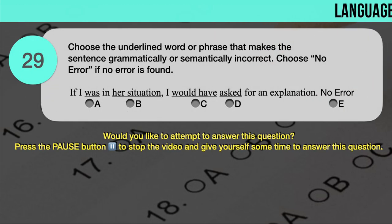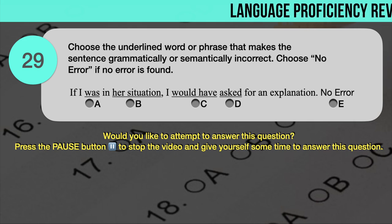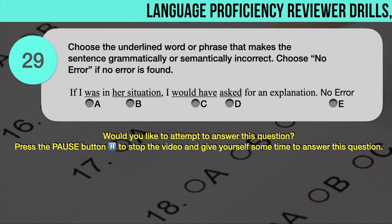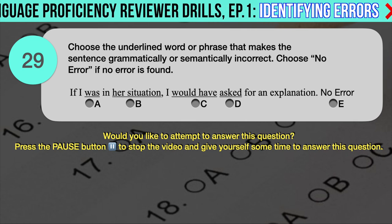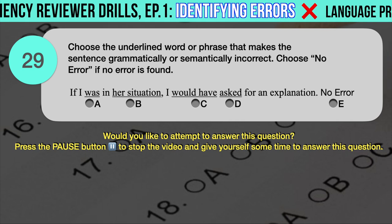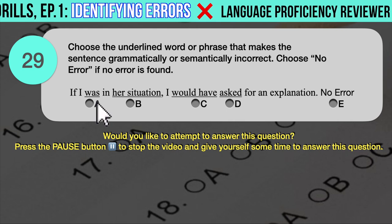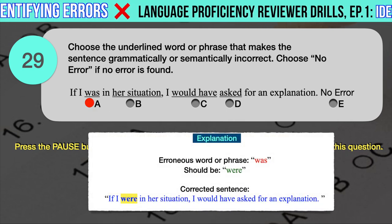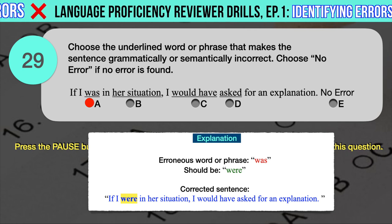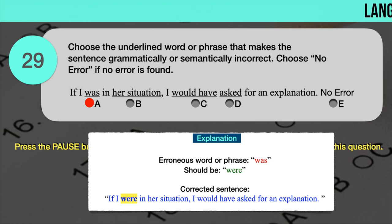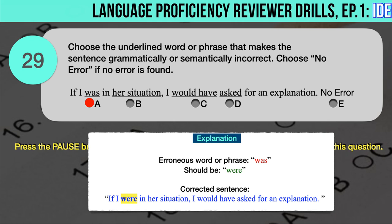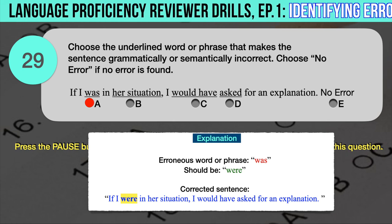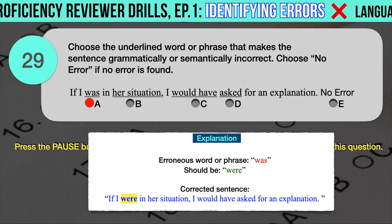Drill question number 29. 'If I was in her situation, I would have asked for an explanation.' The underlined words are: A. Was, B. Her situation, C. Would have, D. Asked. The correct answer is A. 'Was' should have been 'were.' Correct sentence: If I were in her situation, I would have asked for an explanation. The given sentence is in subjunctive mode — the verb form used to explore a hypothetical situation or express a wish, demand, or suggestion. For more on subjunctive mode, check out Review Central's explainer video on subjunctive mode.